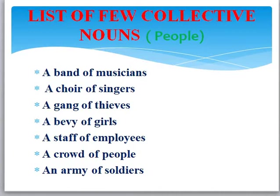A crowd of people: 'The crowd cheered loudly for the Indian cricket team.' At the stadium there was a crowd — that means there were a lot of people cheering for the Indian cricket team. Crowd is the collective noun. An army of soldiers: 'The army fought bravely and defended our country.' As soon as I say army you know I am talking about the collective noun army, which is for soldiers — a lot of soldiers together, we give them one name: army. So band, choir, gang, bevy, staff, crowd, army — these are all collective nouns.